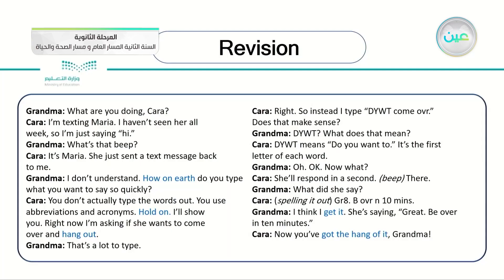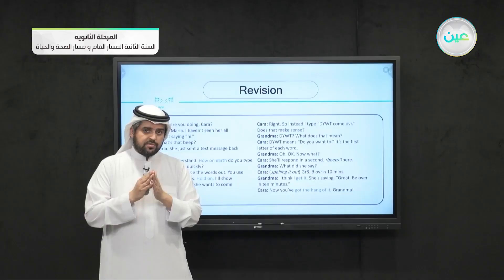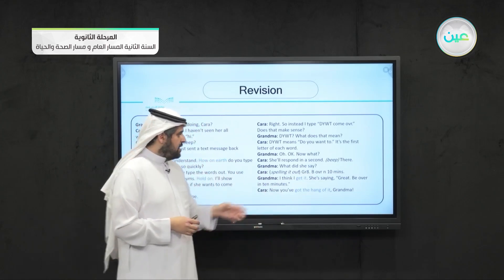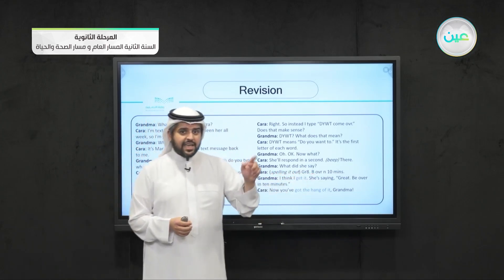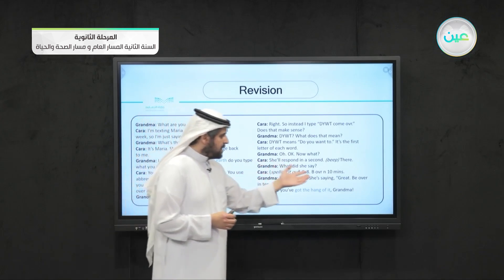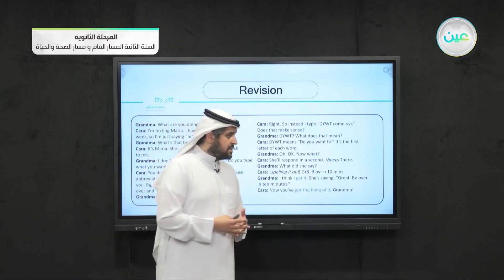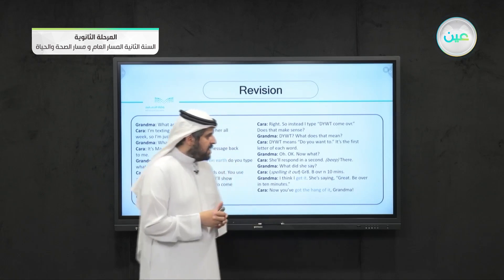Then she figured out the next acronym: G-R-8-B-O-V-R-N-10-Minutes. This is an acronym where you use numbers. G-R and the number 8 — if you read it quickly, it's 'great.' B-O-V-R is an abbreviation. Instead of writing 'in' in '10 minutes,' you just write the letter N. Abbreviations and acronyms are a modern way to save time and write as quickly as possible.